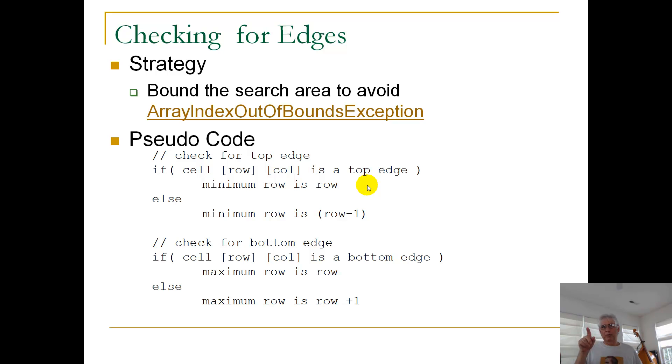Recall our strategy on the happy day case. We looked at row R minus 1, the row immediately above. We looked at the row the cell is in, row R, or there's a row.